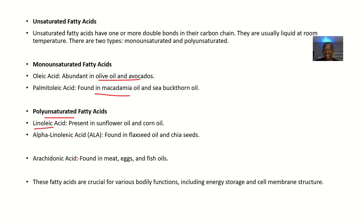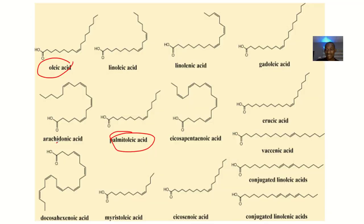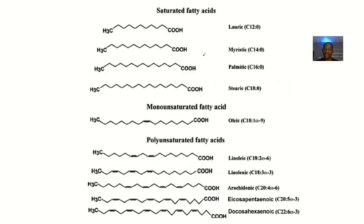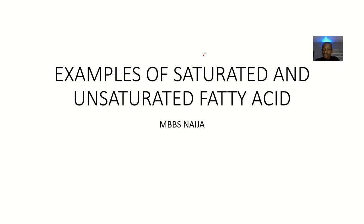For polyunsaturated fatty acids, we have linoleic acid and alpha-linolenic acid. Here is the structure of linoleic acid, and here is alpha-linolenic acid. Pause the video, look at the diagram of any one of them, learn how to draw it, pick one, and work with it. That's it for the chemical structures of examples of saturated and unsaturated fatty acids.